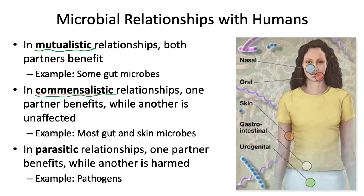The reason we study medical microbiology is because of parasitic relationships. This is when a pathogen, like a bacterium or a virus, causes an infection. In parasitic relationships, the microbe benefits but the human host is harmed. The person that is harmed we call the host, and the partner that benefits — like the virus or the bacterium — is called the parasite or the pathogen.